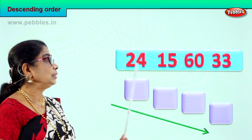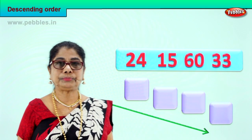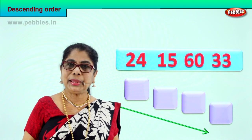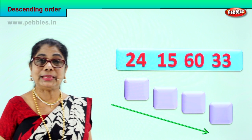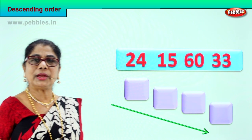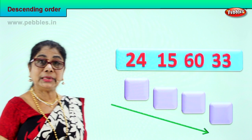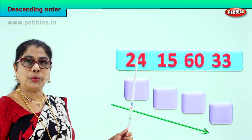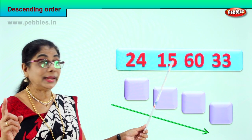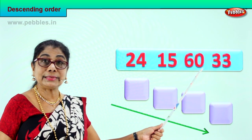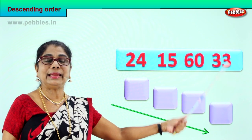Now I have four sets of numbers for you — one, two, three, four. To pick the biggest number, we need to look at the tens place. Let's look at all the tens places in these four numbers. Twenty-four: two tens. Fifteen: one ten. Sixty: six tens. Thirty-three: three tens.